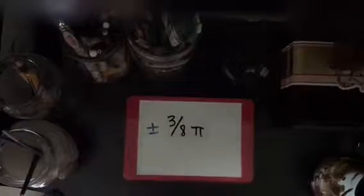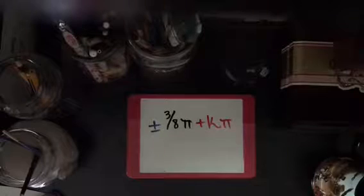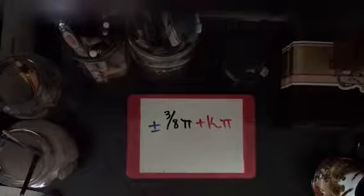So if you were to go and write that down it would be plus or minus 1.178 which is equivalent to plus or minus 3/8 pi. So if you were to put it in the form you need it would be plus or minus 3/8 pi plus k pi.